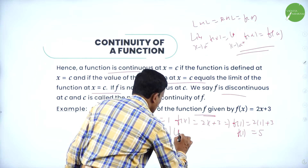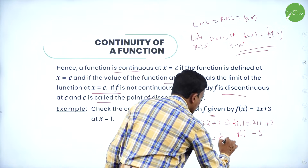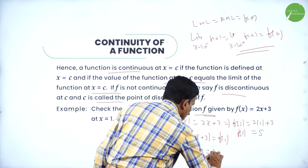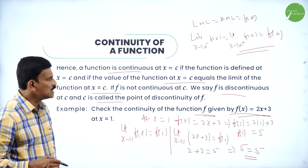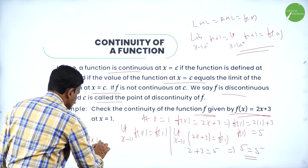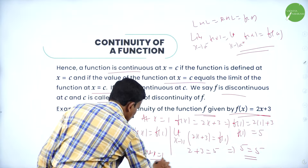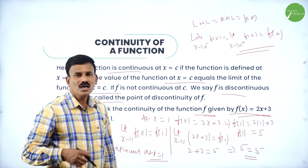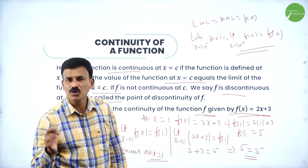The limit as x→1 of f(x) = limit as x→1 of (2x + 3). Substituting x = 1: 2(1) + 3 = 5 = f(1). Since 5 = 5, therefore the function f(x) = 2x + 3 is continuous at x = 1. This is how we verify continuity: find the limit at the point and compare it to the functional value. If they are equal, it is a continuous function.